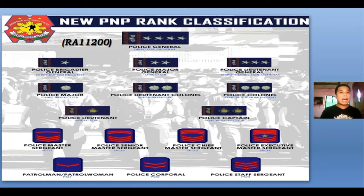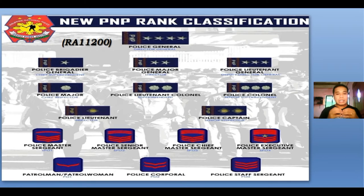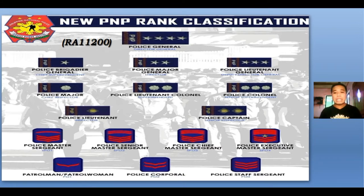The highest rank — that of the Chief of Police — is now Police General, whereas in the old law it was called Police Director General. Take note that commissioned officers start from Police Lieutenant up to Police General. On the other hand, ranks from Patrolman or Patrolwoman up to Police Executive Master Sergeant belong to non-commissioned officers.